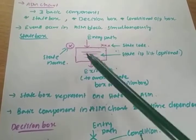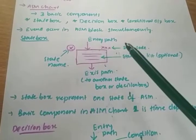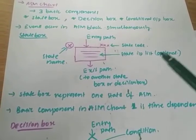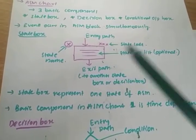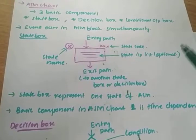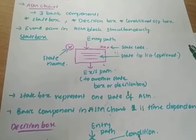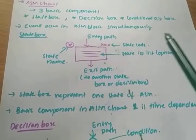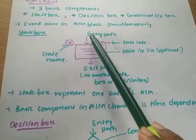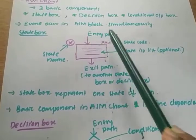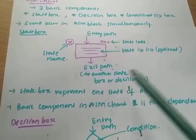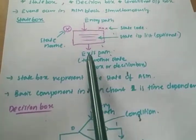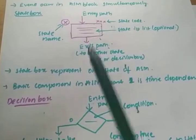The state box is time dependent. In a state diagram, the state is represented with a circle, but in an ASM chart the state is represented within a rectangle. There are two arrows — one is the entry and another is the exit — and the exit is given to another state.